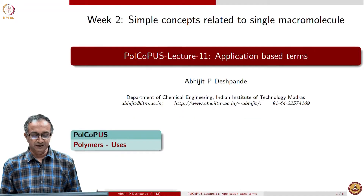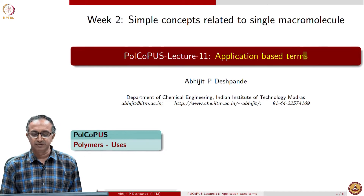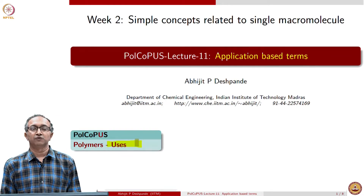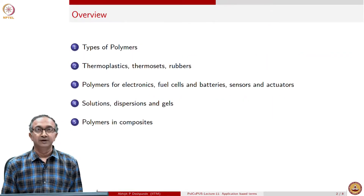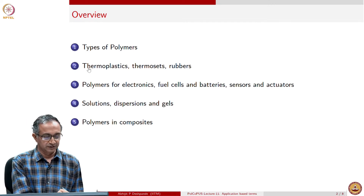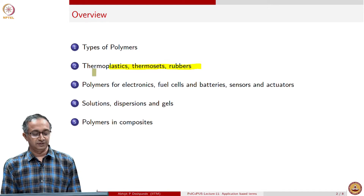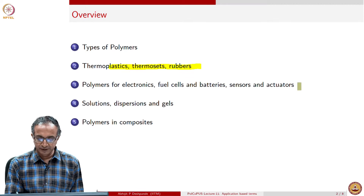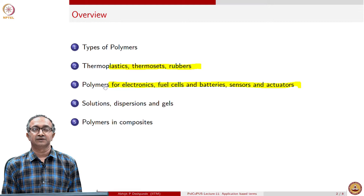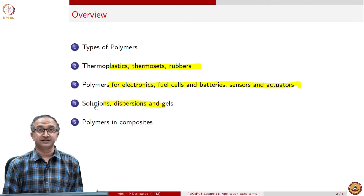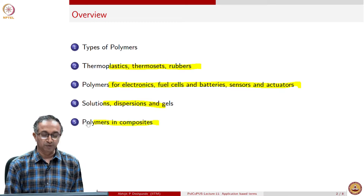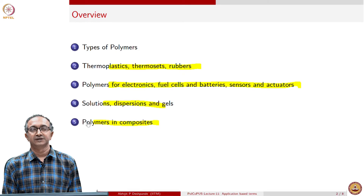Hello, let us continue our discussions on polymers. In this lecture we will finish some of our definitions related to types of polymers and how they are referred to, especially from an application point of view. We will look at application-based terms with specific emphasis on how polymers are used, polymers for energy and robotics, advanced applications like paints, and importantly, polymers in composite materials where they are incorporated with another material.